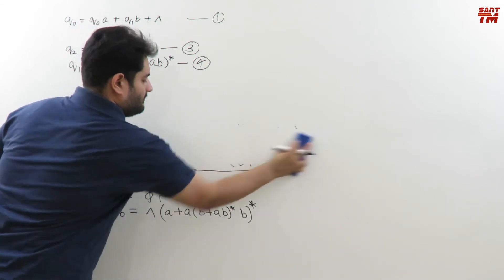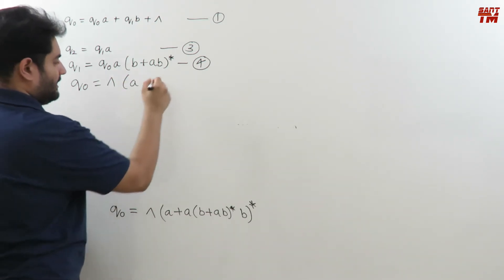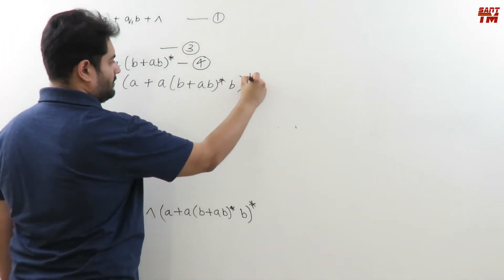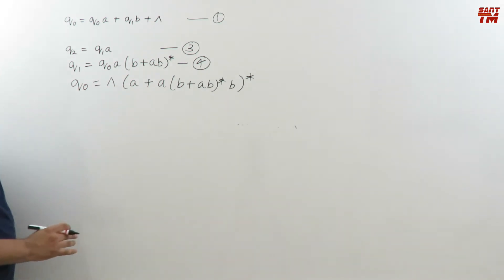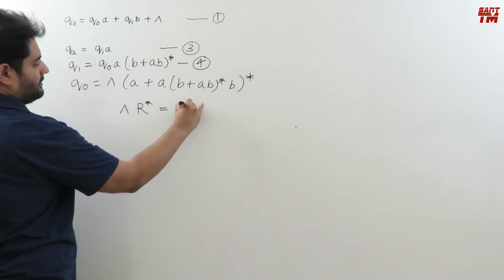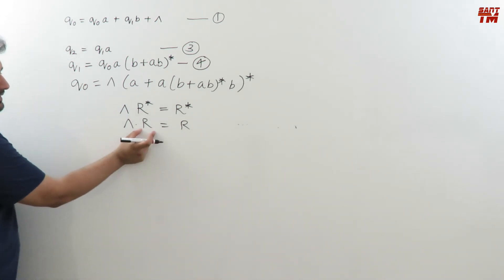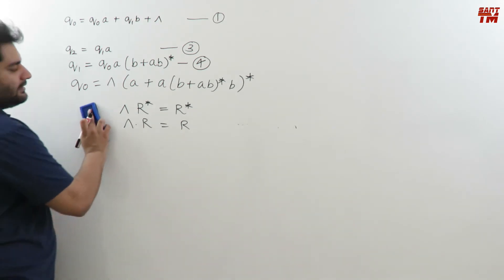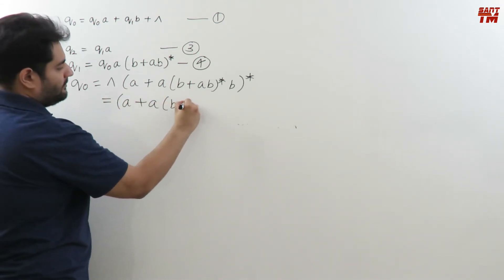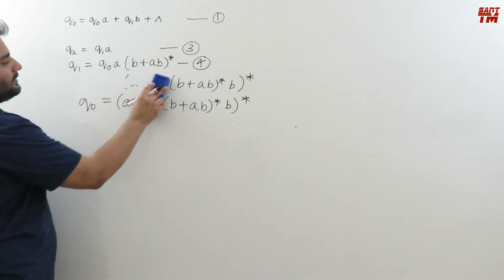There is a property of regular expressions: null · R = R — when you multiply any regular expression with null you get that regular expression directly. So q0 = null · (a + a·b + a·b*·b)* simplifies to q0 = (a + a·b + a·b*·b)*. This is the final equation of q0.